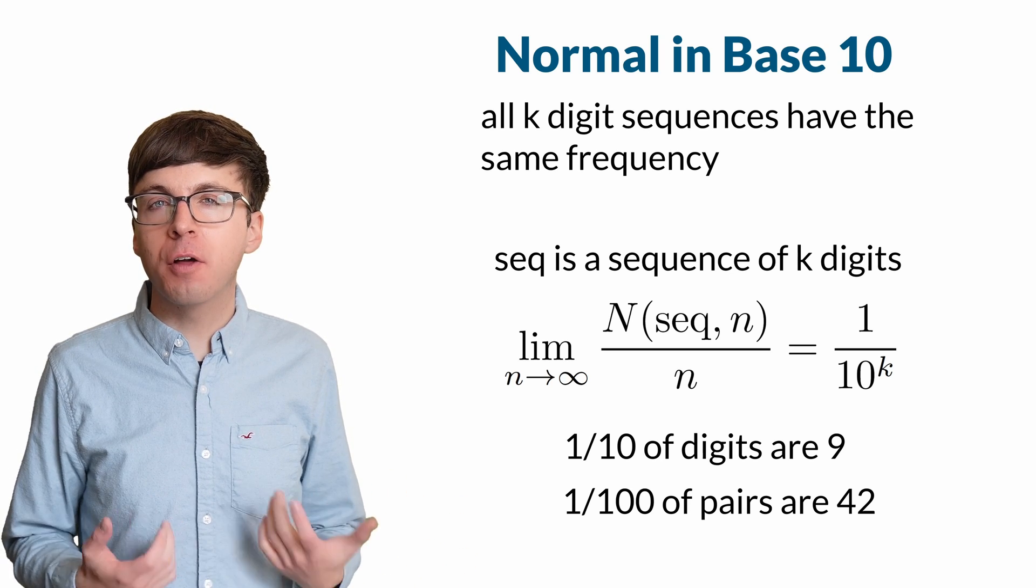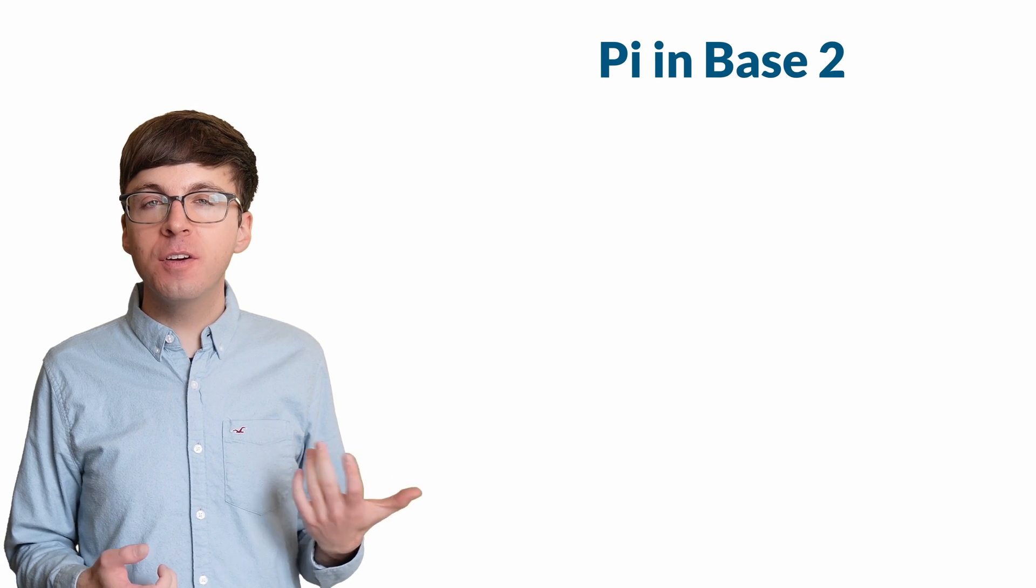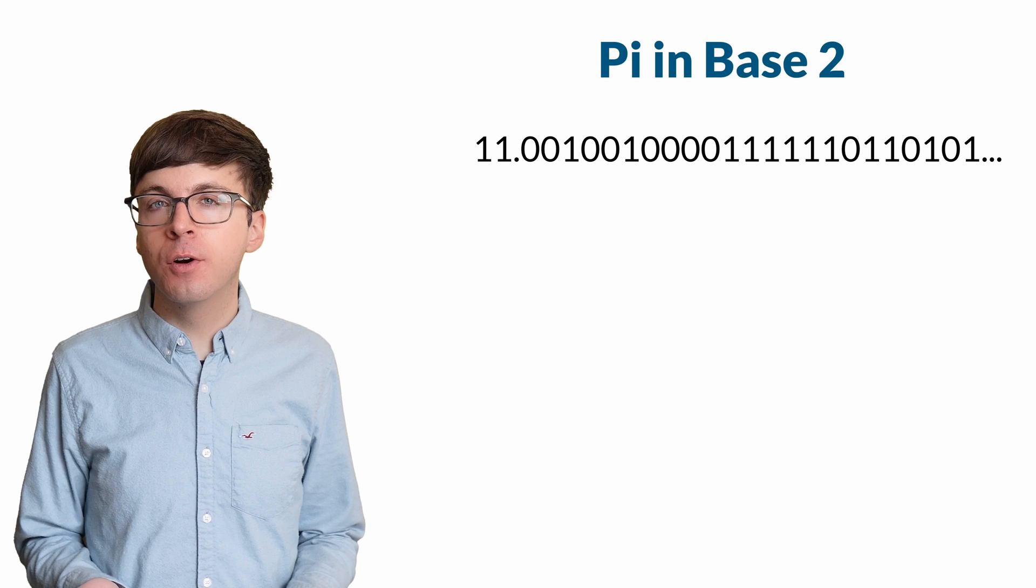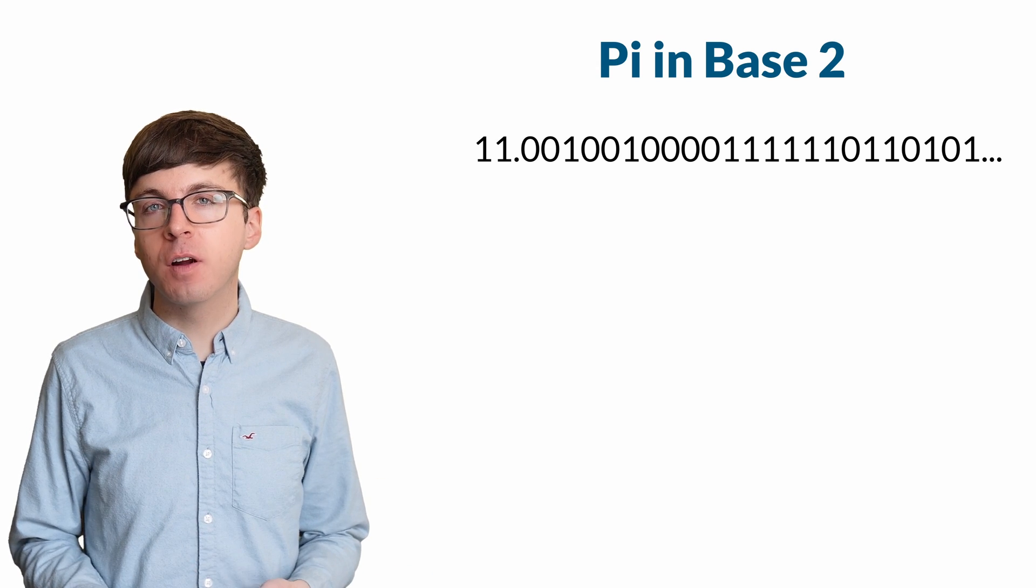We can make similar definitions for other bases. For example, here is pi in base 2. Do these appear to be random 1s and 0s, like if we repeatedly flipped a fair coin?